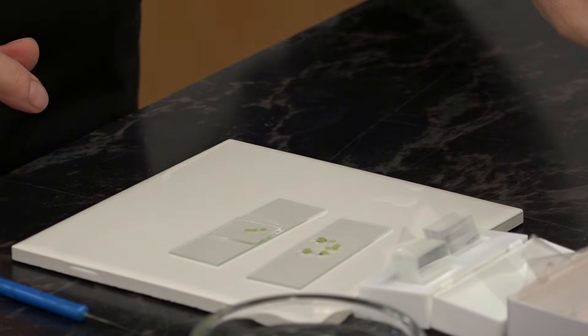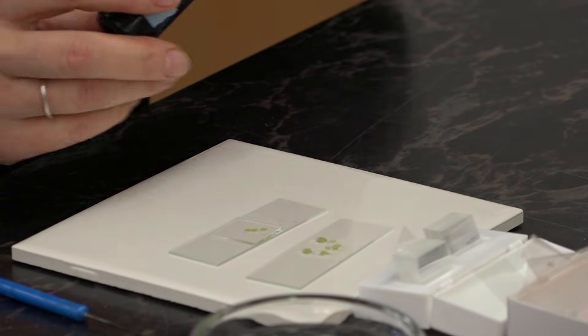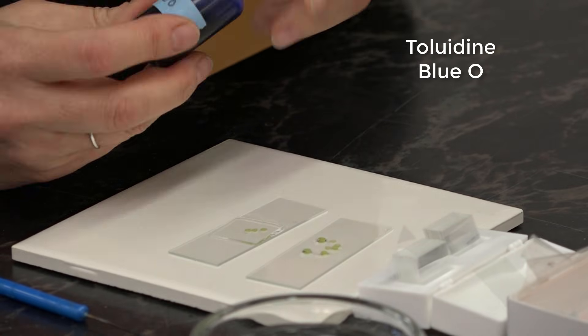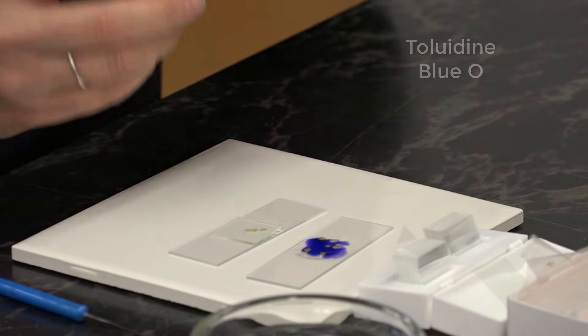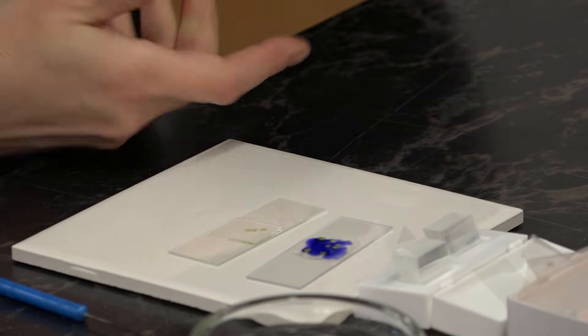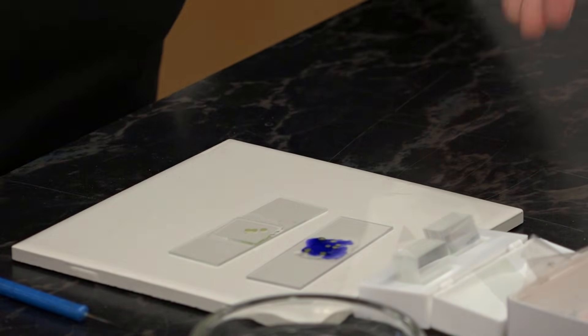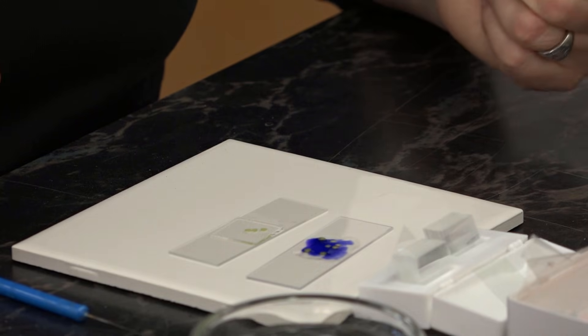For this example I'm going to stain it. I'm going to use TBO, and I'm going to add a drop or two of the stain, and let that diffuse into the tissues for a couple of minutes.